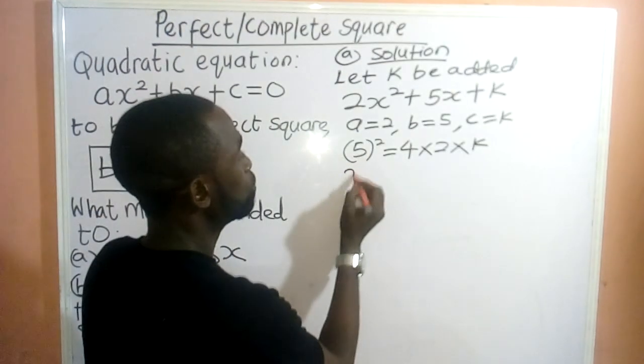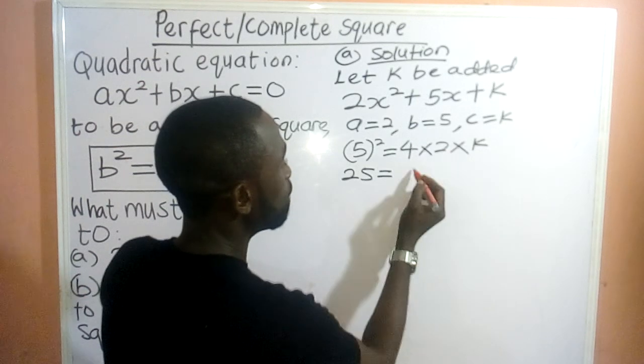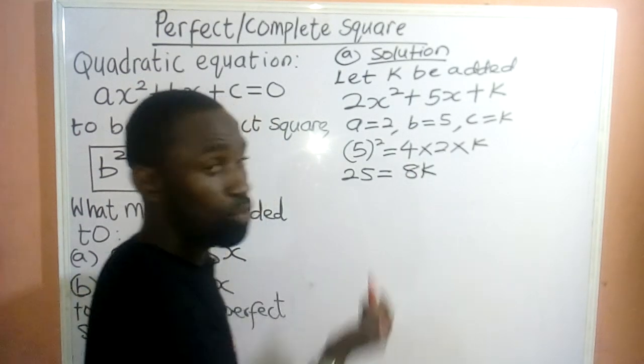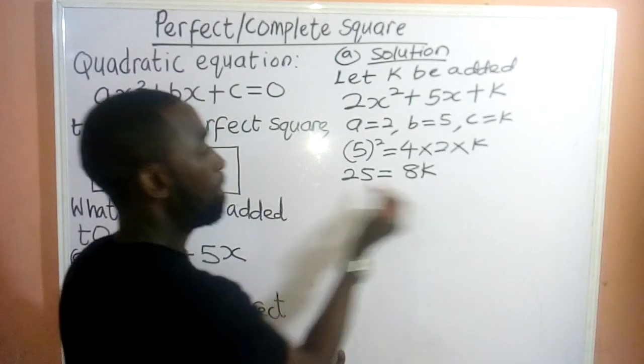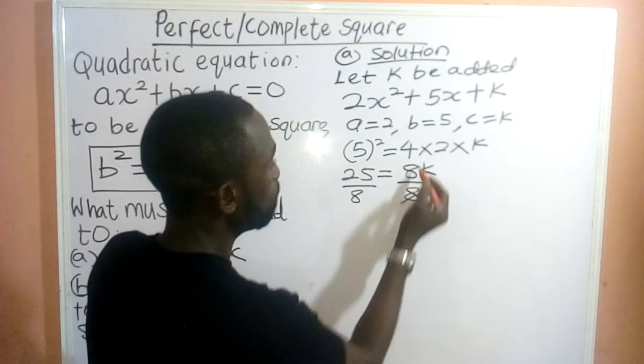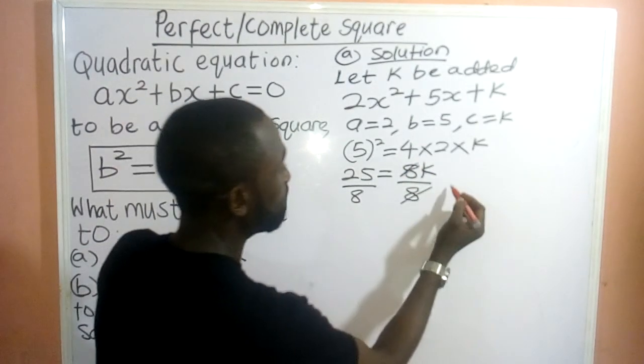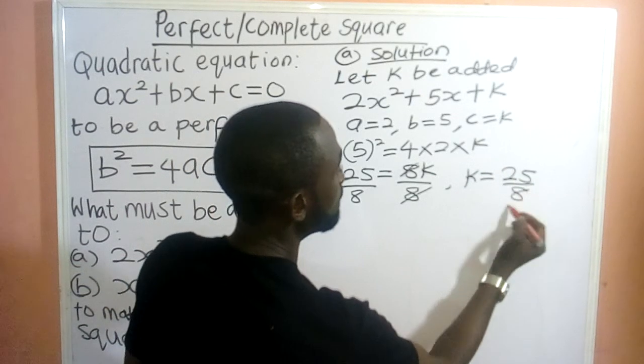So, from here, we have 25 = 4 × 2, 8. Then, 8 × k, we have 8k. Then, we make k to stand by itself. So, we divide through by 8. 8 here, we cancel this 8. So, it therefore implies that our k would be equal to 25/8.